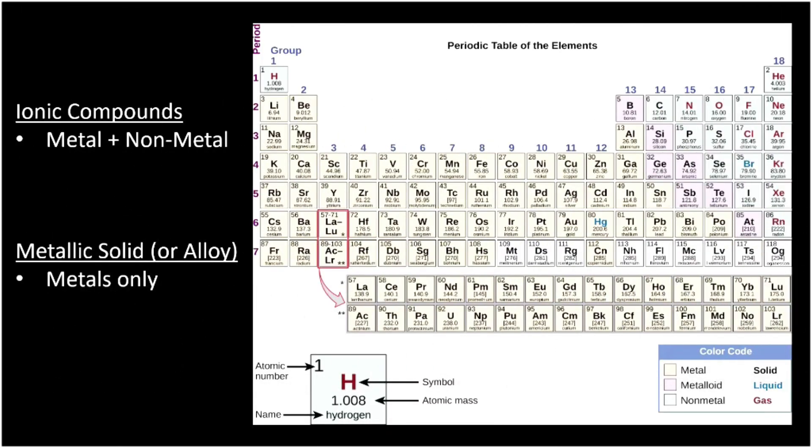Remember that whenever we combine a metal and a non-metal, we get an ionic compound. We can use our periodic table to tell the difference. The non-metals are over here on the right, and the metals are on the left. So if you mix together something from the right and left-hand side, then you get an ionic compound.